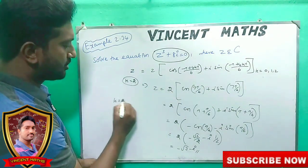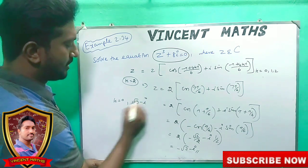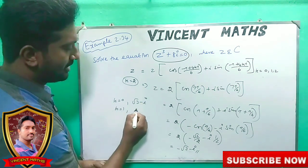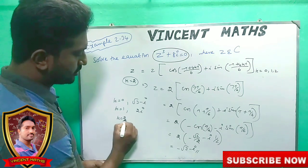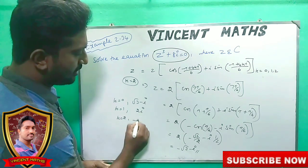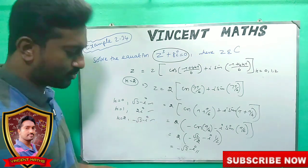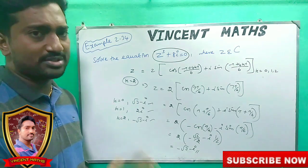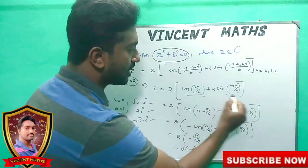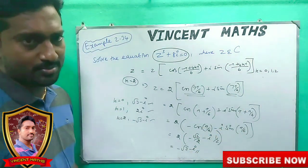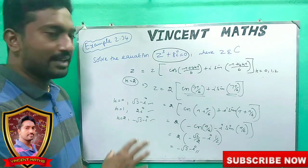So the three roots are: k=0: √3 − i; k=1: 2i; k=2: −√3 − i. Very simple, friends — this chapter is very simple.